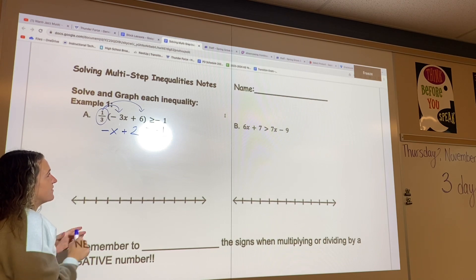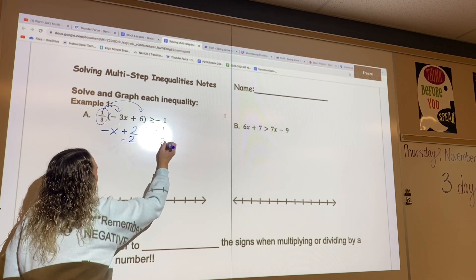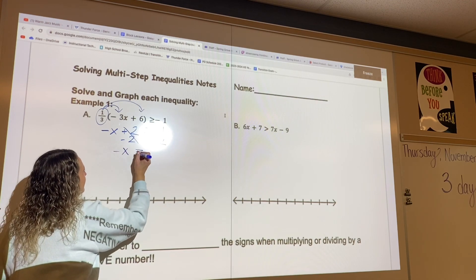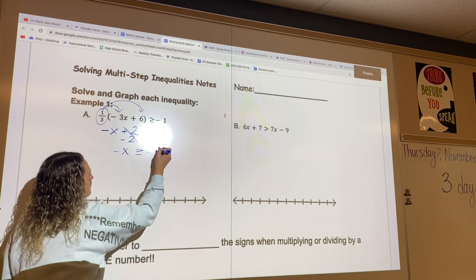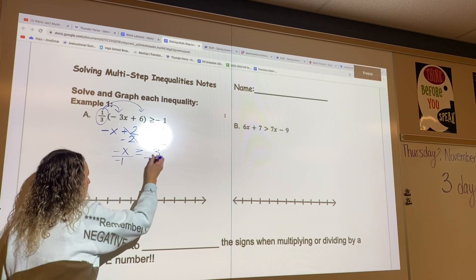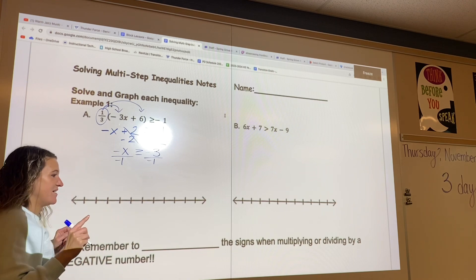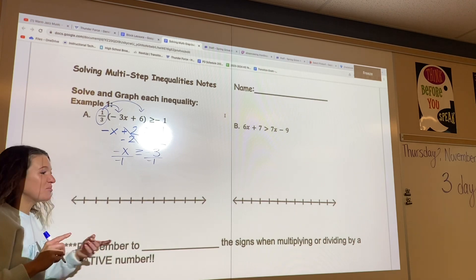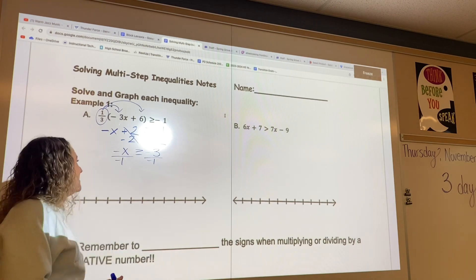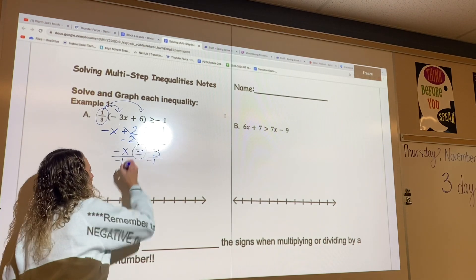Now we're going to get rid of that 2. We're just going to subtract just like it was a normal equation. So we have negative x is greater than or equal to negative 3. And then my very last step will be to divide by negative 1. But whenever you are multiplying or dividing by a negative number, you must flip the sign. So make sure you flip that sign.